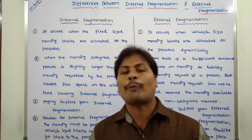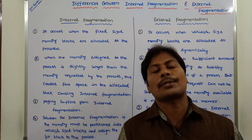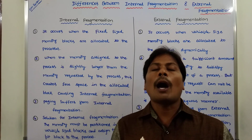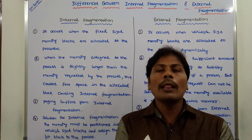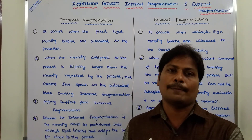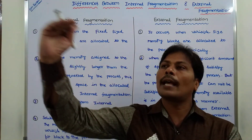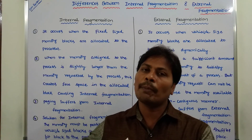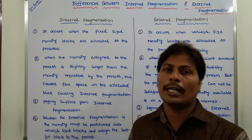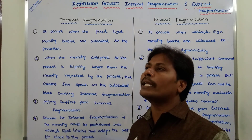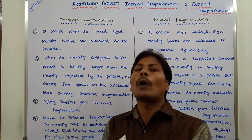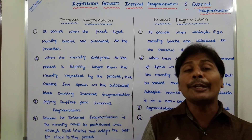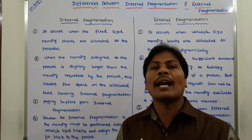What is the solution for external fragmentation? The solution is compaction. Compaction shuffles all the free spaces to one place — 1KB free here, 1KB free there, another 1KB free elsewhere — these four 1KB free spaces are combined into one place. That is called compaction, and by using compaction we reduce external fragmentation. However, compaction is expensive.